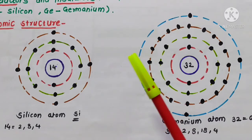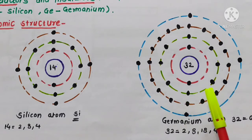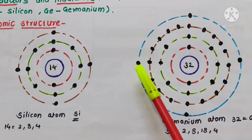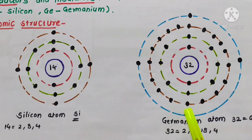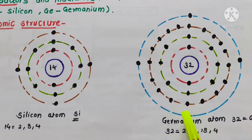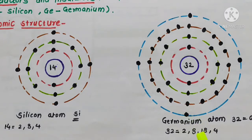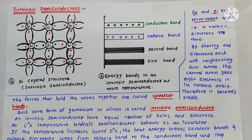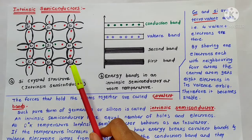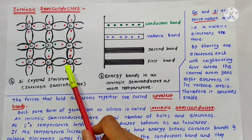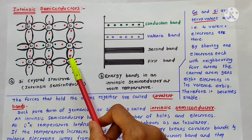These valence electrons are bounded by a force of attraction. But the last 4 electrons — either in silicon or in germanium — those 4 valence electrons in the last orbit are loosely bounded. Now, when germanium or silicon atoms combine to form a solid, they arrange themselves in an orderly pattern called a crystal.